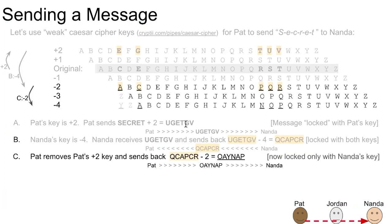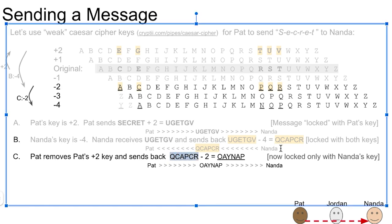Well, now Pat receives that, and that doesn't make sense to Pat. Pat doesn't understand what that is necessarily here. We'll be able to figure it out because it's an easy code to break. So then Pat removes Pat's original keys. Now Pat originally did a plus two. So if Pat's going to remove the plus two, Pat's going to do a minus two.